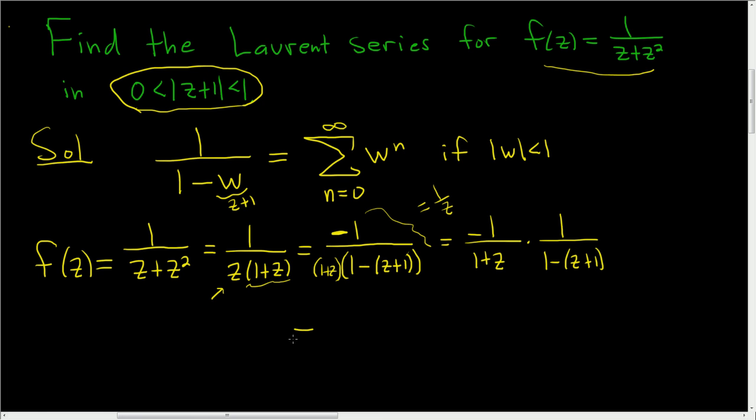And now we can use the formula. So this is the infinite sum. And we still have this piece here as n runs from 0 to infinity of z plus 1 to the n. And we can do that because we know the modulus of z plus 1 is less than 1. Now we can just distribute the 1 plus z.